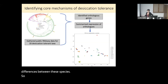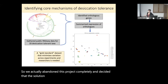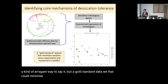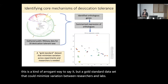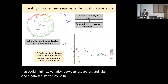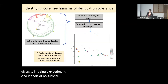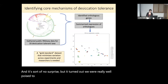So we abandoned this project completely and decided the solution was to develop what we would call a gold standard dataset that could minimize variation between researchers and labs. A dataset like this could be generated by sampling all of this diversity in a single experiment. And it turned out we were really well poised to generate such a dataset.